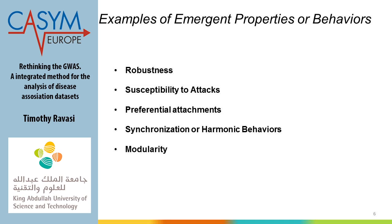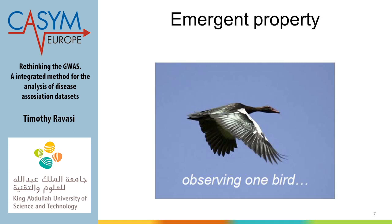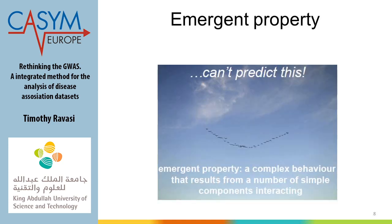Modularity: complex systems are built by different components that tend to form modules. Here is an example of an emerging property. Take a single bird — you can study its physiology, genetics, and genomics — but if you ask how this bird flies long distance or protects itself against predators, that is something you discover only at the collective level.